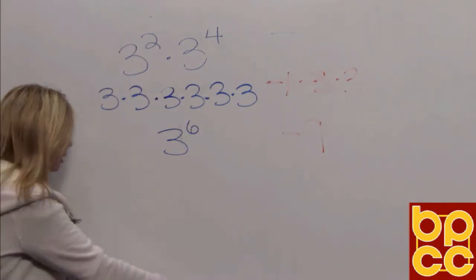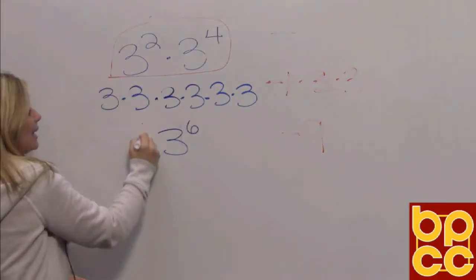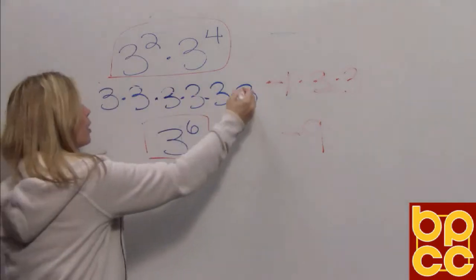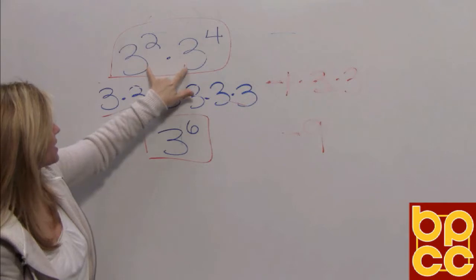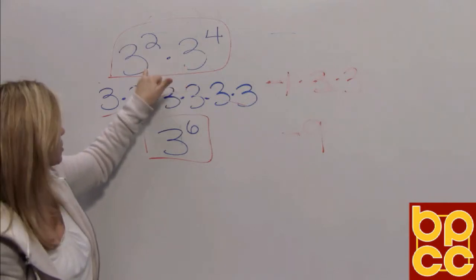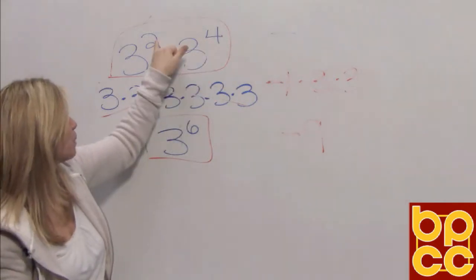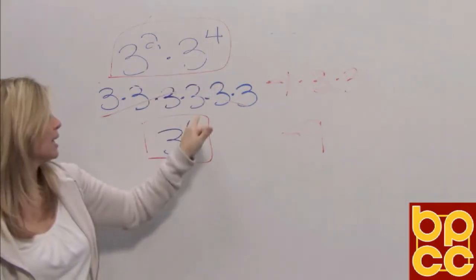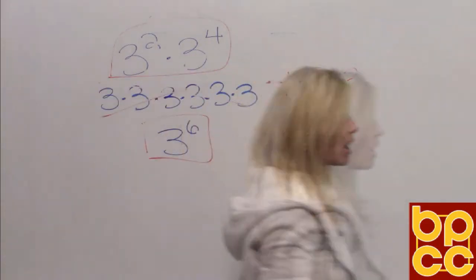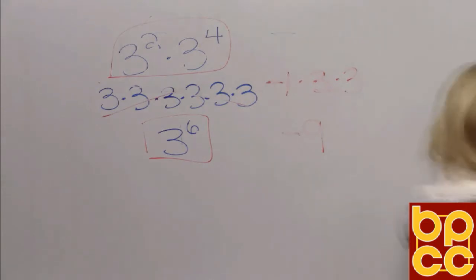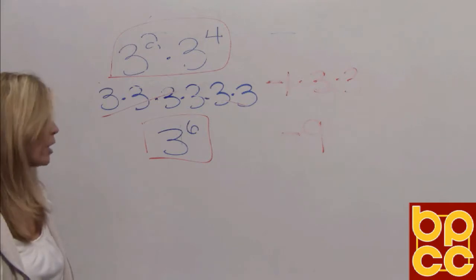What we want to do in algebra is look at an expression and get the result without doing all that work. So we have a rule: when you multiply the same base, all you do is add the exponents. The base is 3 in both terms; 2 plus 4 makes a total of 6. We are going to use this rule all the time in algebra, because remember, we are multiplying not just numbers but variables. So let's look at one of the examples in the class notes.